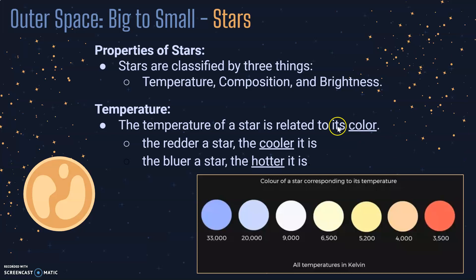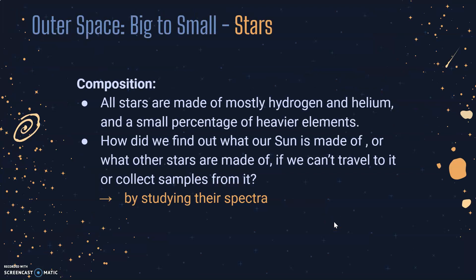So again, temperature is determined by color — when you look at a star, it could be any one of the colors you see in the picture. The next property used to classify stars is their composition. All stars are made of mostly hydrogen and helium — we talked about that when discussing the Big Bang — and then they have a small percentage of heavier elements. The way we figure out what stars are made of is by studying their spectra. You compare the spectra of the star to the spectra of known elements and see how they match, which is how we know what stars are made of even though we can't travel to them.